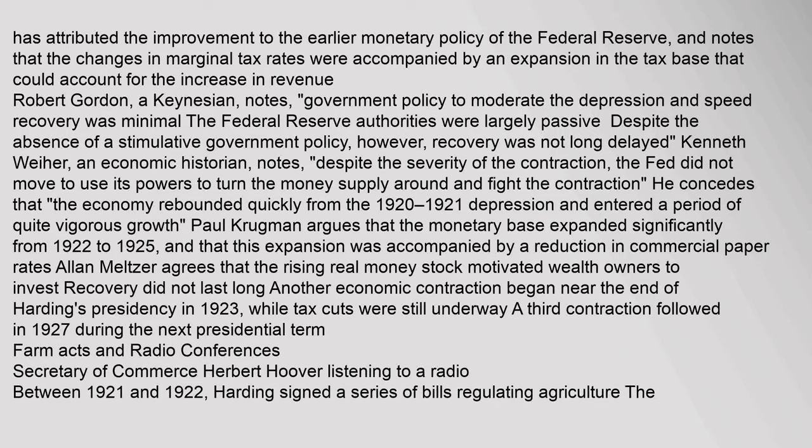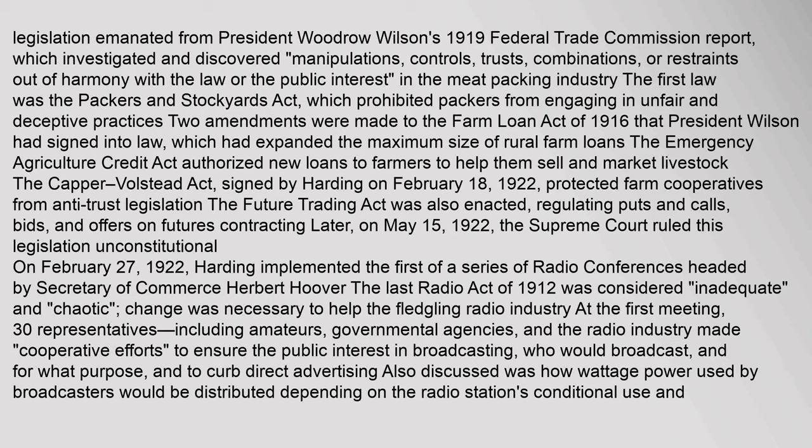Legislation emanated from President Woodrow Wilson's 1919 Federal Trade Commission report, which investigated 'manipulations, controls, trusts, combinations, or restraints out of harmony with the law or the public interest' in the meatpacking industry. The first law was the Packers and Stockyards Act, which prohibited packers from engaging in unfair and deceptive practices. Amendments to the Farm Loan Act of 1916 expanded the maximum size of rural farm loans. The Emergency Agriculture Credit Act authorized new loans to farmers. The Capper-Volstead Act, signed by Harding on February 18, 1922, protected farm cooperatives from antitrust legislation.